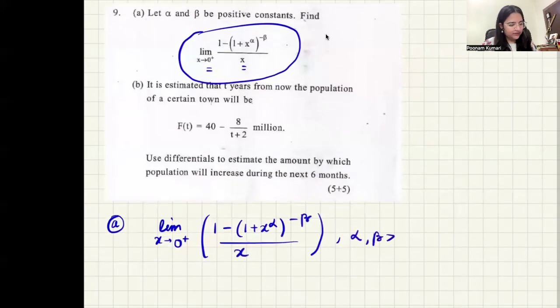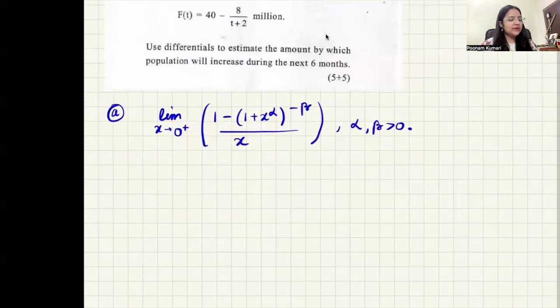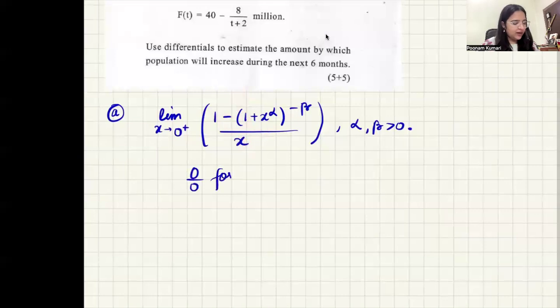If we directly try to put zero in this function, this becomes zero, and then one raised to the power anything is one. So we get one minus one form on top. So this is a zero by zero form. If we have zero by zero form, then we can apply L'Hospital's rule. L'Hospital's rule can be applied.